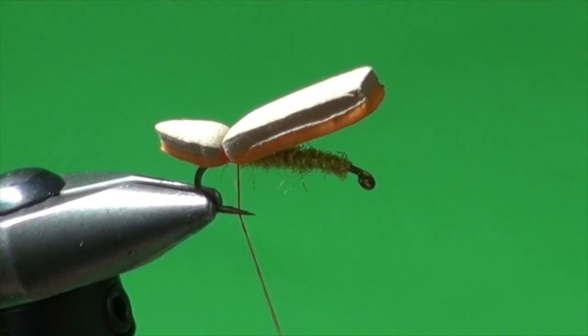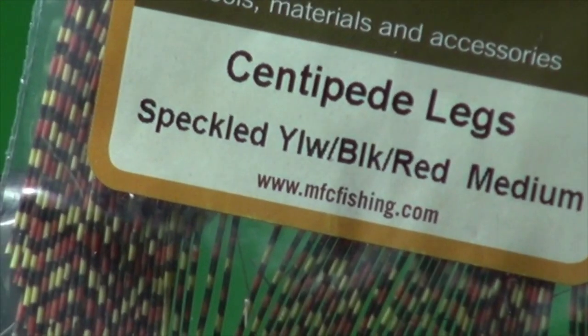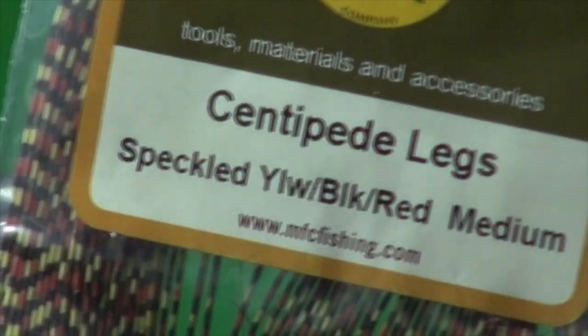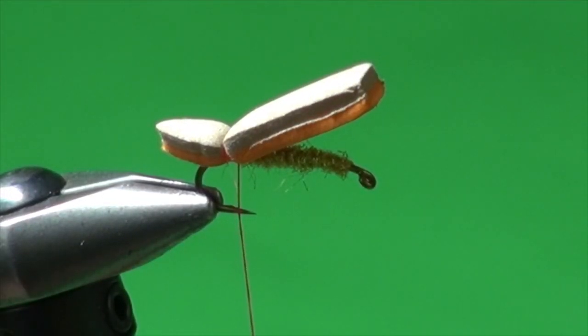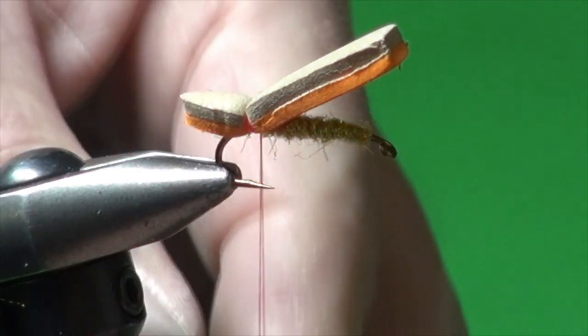And then we're going to add a pair of legs on each side. So we're going to use some centipede legs. You can use lots of different colors, but I really like this speckled yellow, black, and red in medium. So what I'm going to do is I'm going to take these two.